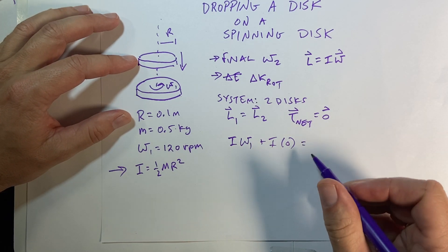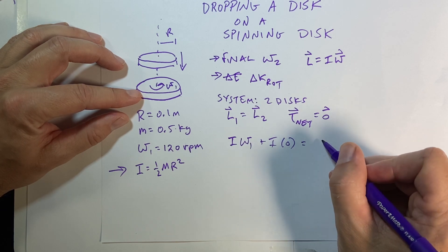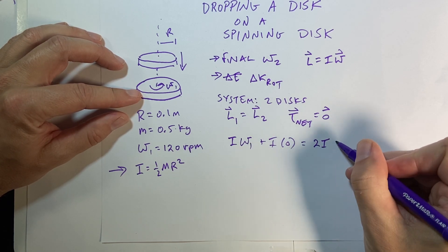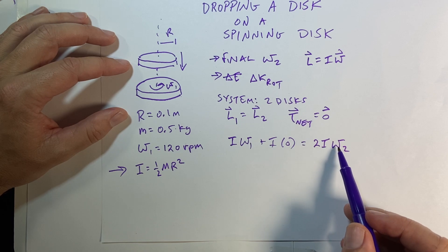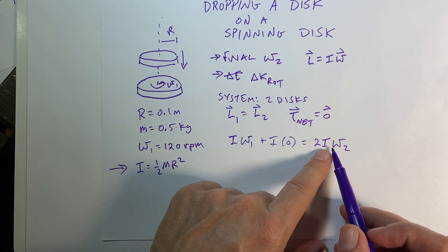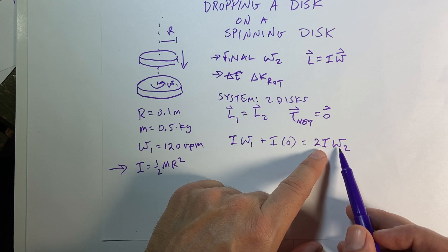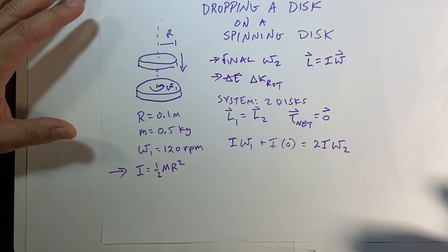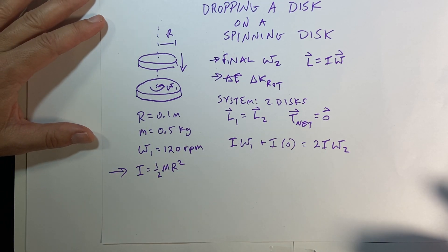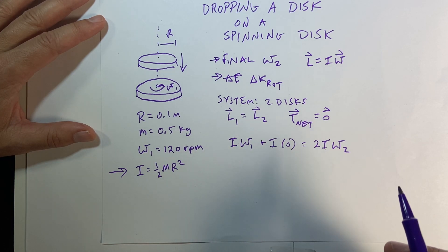And that's going to be equal to the final angular momentum, which is going to be 2I, omega-2. So you see here that they both have the same angular velocity at the end. So their angular momentum will add together. But they'll have a new angular velocity. So right now you can already see this is an easy problem. But we're going to make it all the way.